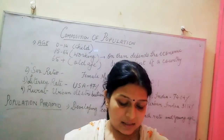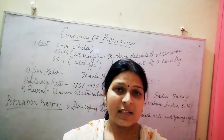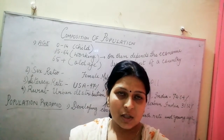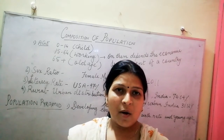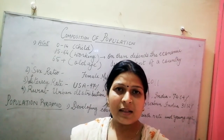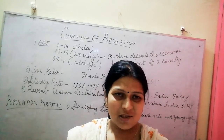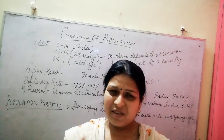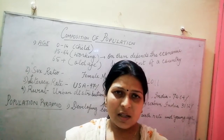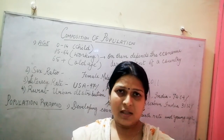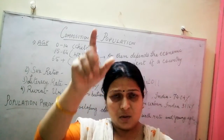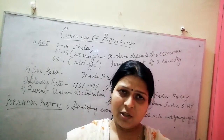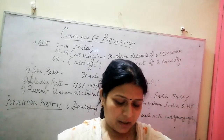In developed countries like Japan, there is more old age population. Their pyramid is rectangular in shape because the fertility rate is not so high, so the children population is less and the old age population is more — resulting in a rectangular pyramid structure.